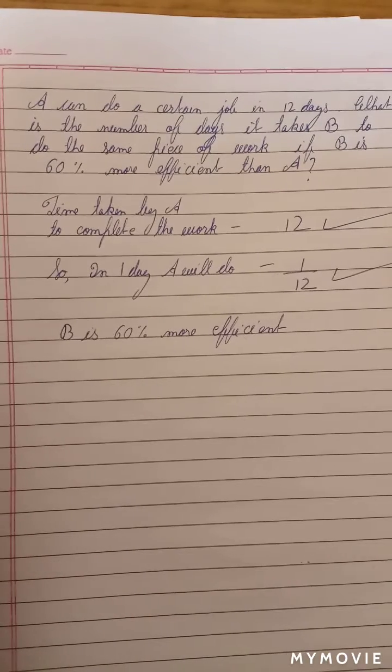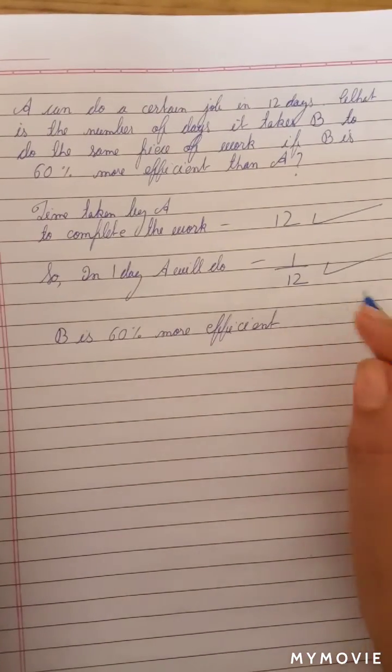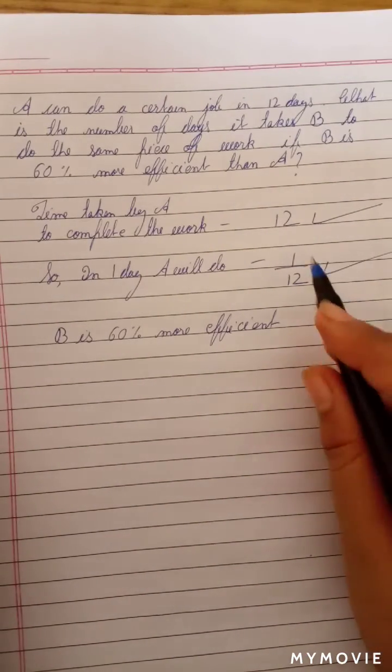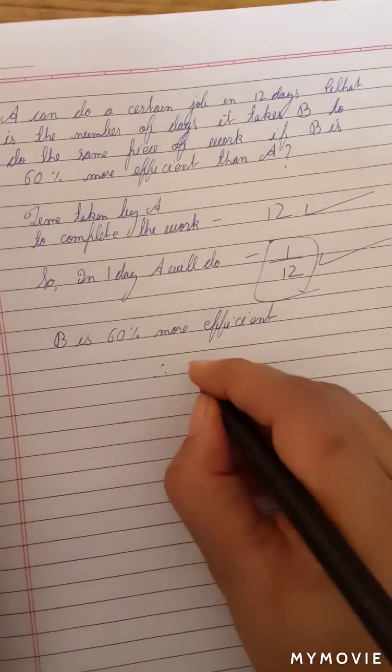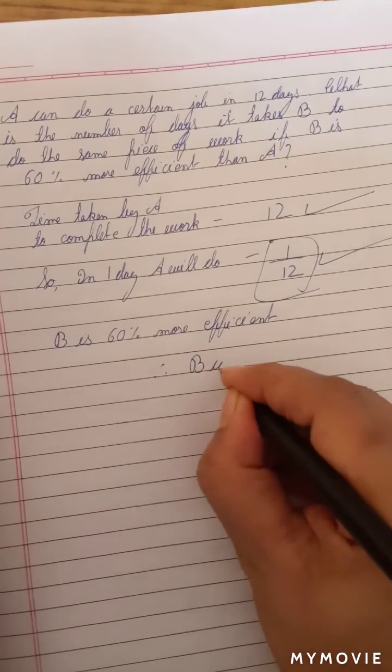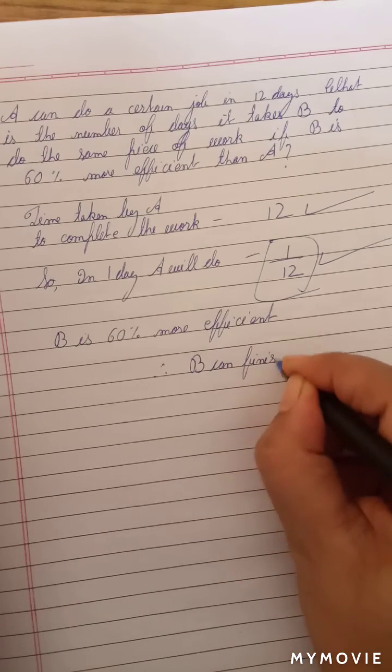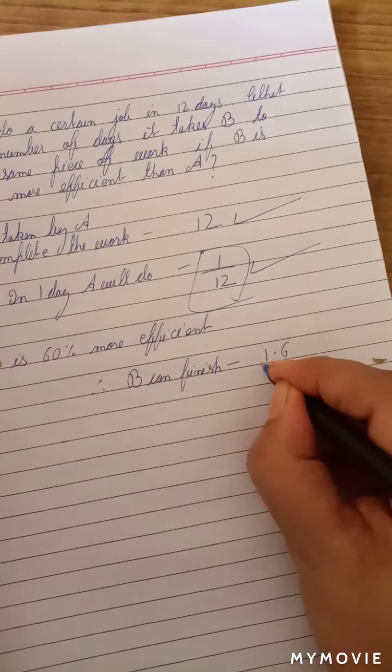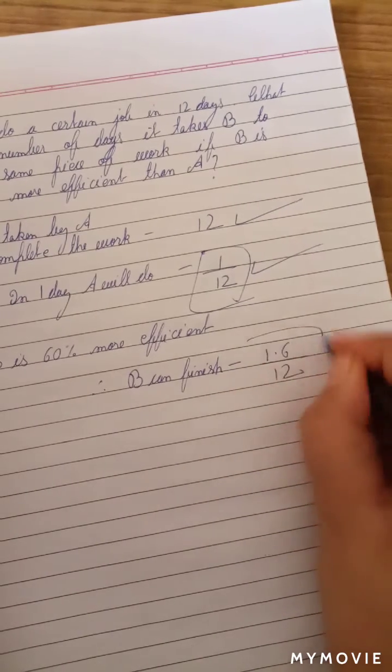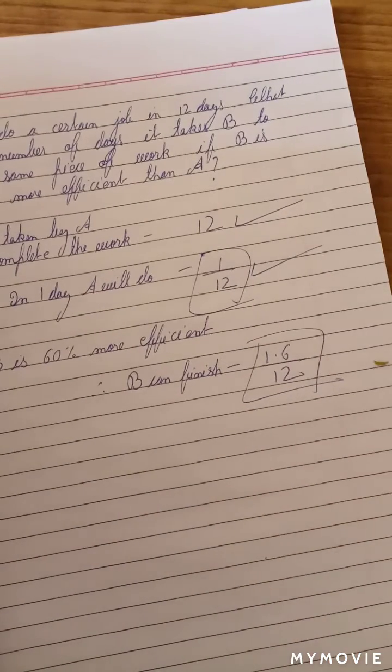B is 60% more efficient. So in one day, if A can finish this much part of work, therefore B can finish 1.6/12, this much part of work, because B is 60% more efficient.